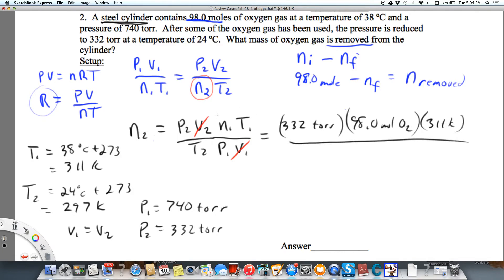And I divide that by 740 torr. You can see my units will cancel here. And T2 is 297 Kelvin. So it turns out that n2 equals 46.0 moles.